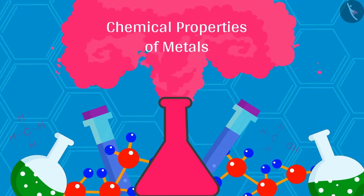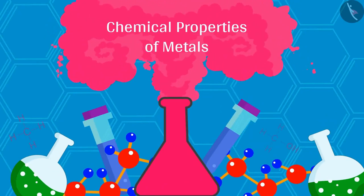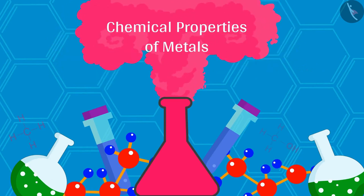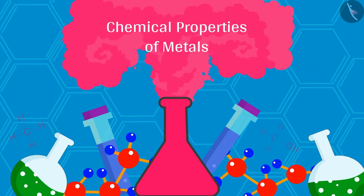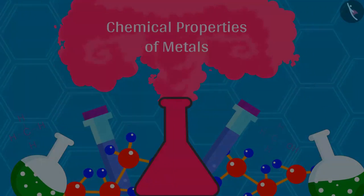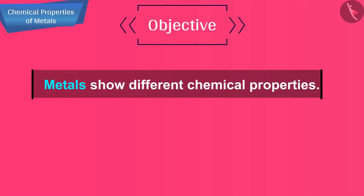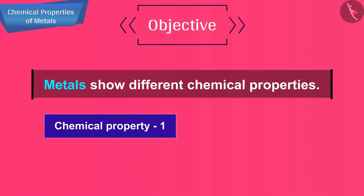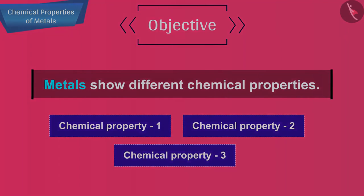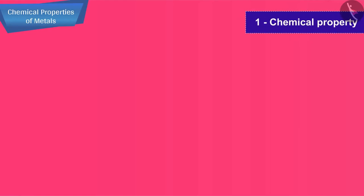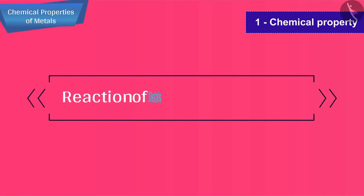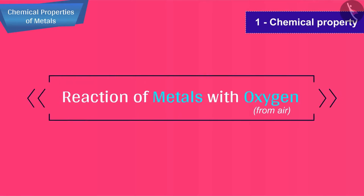Hello friends, welcome to this video session. The topic that we are going to cover in this session is Chemical Properties of Metals. Metals show different chemical properties. Let's begin and study them one by one. The first chemical property of metals that we are going to discuss is the reaction of metals with oxygen from air.